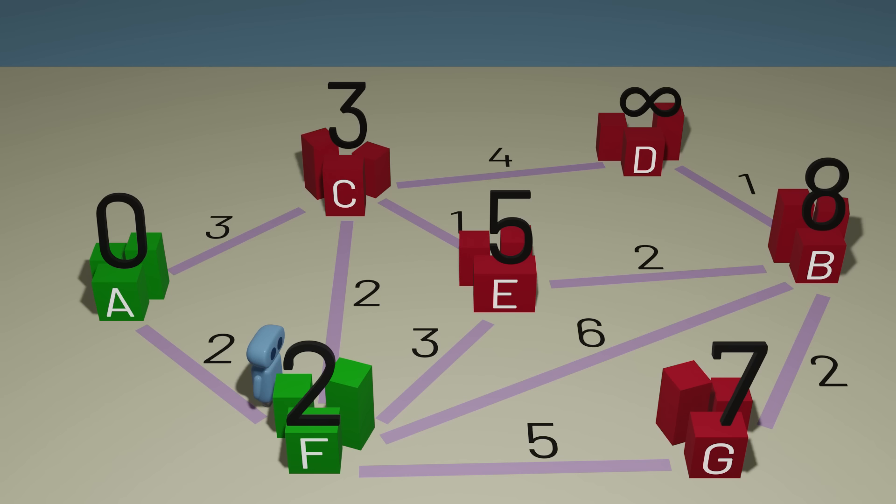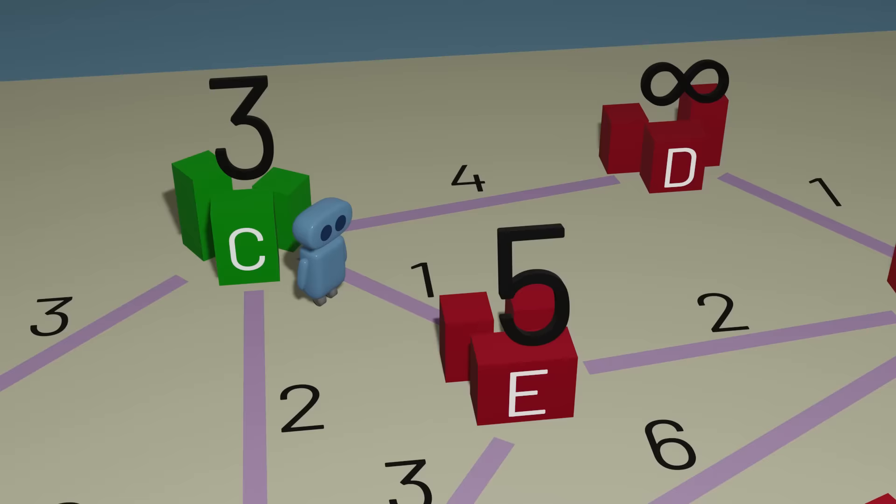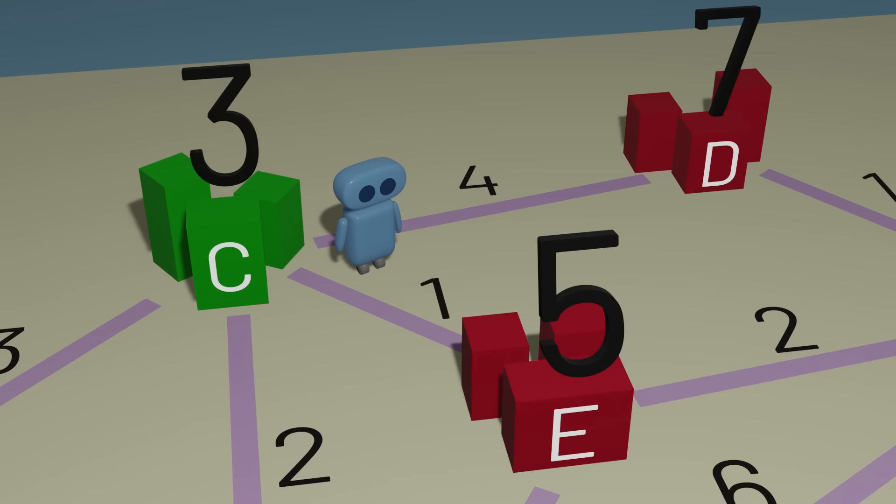The second part of Dijkstra's algorithm tells us to explore the unexplored town with the smallest value. And in this case, that's town C, which we can get to in just three minutes. And the process repeats again. Going through town C, we can get to town D in seven minutes. And we can also get to town E in four minutes. Three minutes to town C, plus one minute from C to E. That four minute estimate is better than our current estimate of five minutes. So we'll update our estimate for town E from five to four.